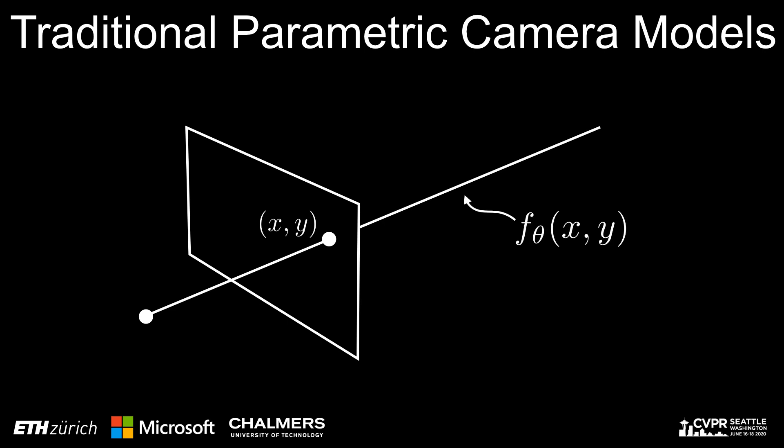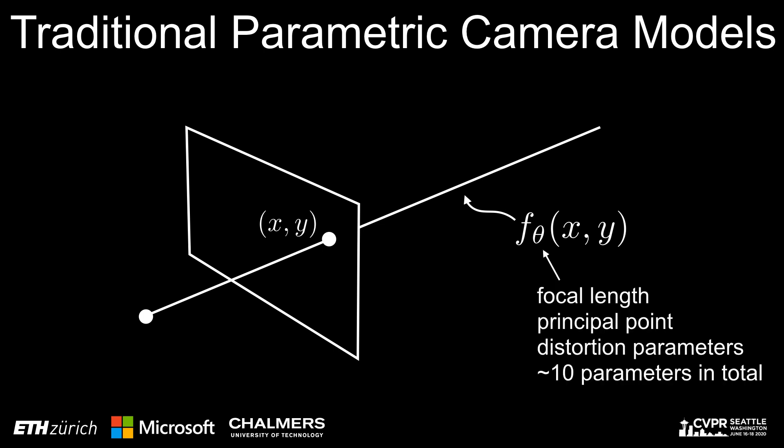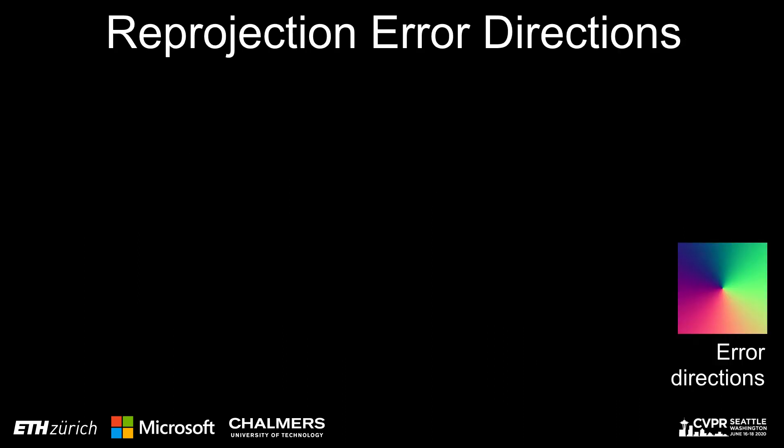Traditionally, parametric models are used. They model the mapping from pixels to rays through only a few parameters corresponding to physical attributes such as the focal length. Parametric models have been used successfully for decades, but how accurately do they actually model the camera geometry?